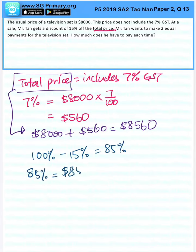85% is $8,560 times 85 over 100 will give us $7,276. So this is how much he'll end up paying.